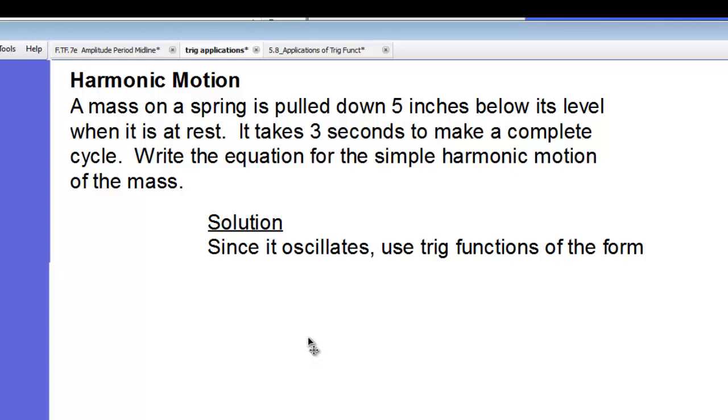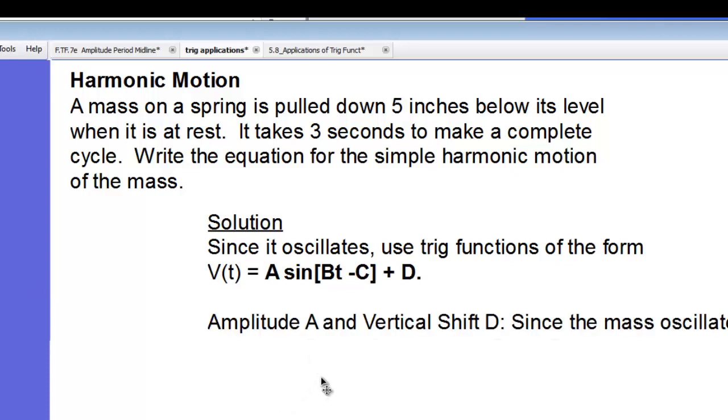Well, since it oscillates, we're going to use trigonometric functions. And why not use sine? It's kind of the most widely used of the trigonometric functions to model periodic phenomena. So the amplitude A and the vertical shift D. Since the mass oscillates between plus and minus 5 inches from its rest level, amplitude is going to be the absolute value of 5 or 5. It isn't removed from its normal midline, so there is no phase shift. There is no vertical shift.